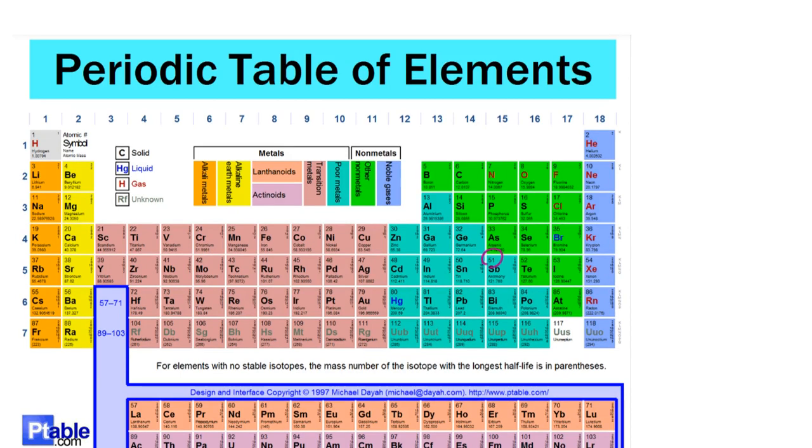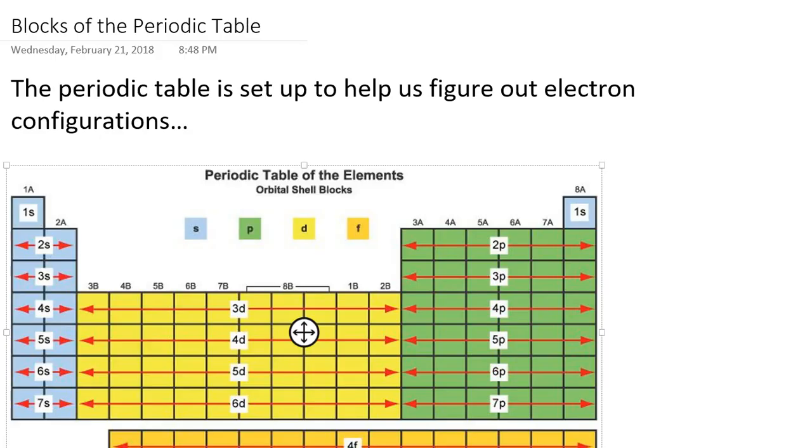We saw that it was 51, and then we would proceed to use our pyramid chart to actually start filling in all 51 electrons into their associated orbitals based on the Aufbau principle, the Pauli exclusion principle, and Hund's rule. And that will always work, however, you should be aware that the periodic table is actually set up to help us to do that.